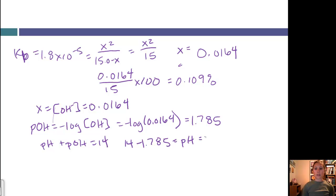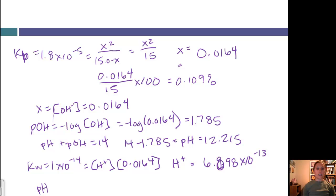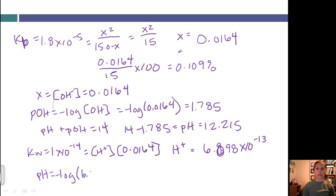The alternate way that I can solve for this is to find the H+ concentration and then solve for pH. I know that Kw is equal to 1 times 10 to the negative 14th, and that is equal to the H+ concentration times the OH concentration, which in this case is 0.0164. My H+, if I do that math, is 6.098 times 10 to the negative 13. Then I can solve for the pH is equal to negative log of H+, which in this case is 6.098 times 10 to the negative 13. I get 12.21. Either way, you're going to get the same answer.